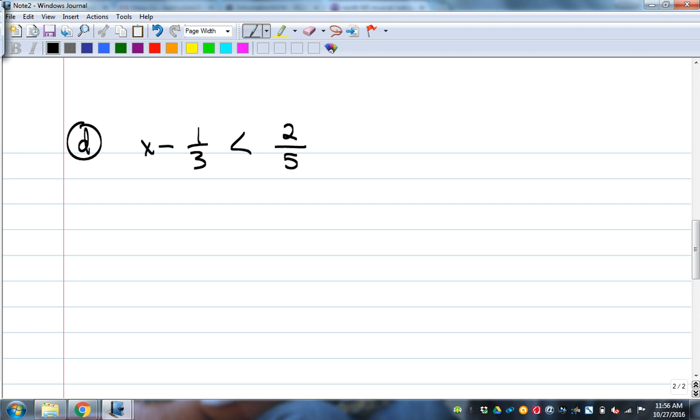x minus 1/3 is less than 2/5. Okay, so to get x by itself, we're going to add 1/3. The common denominator would be 15. So this would be 6 over 15 and 5 over 15. So x is less than 11 over 15. That doesn't reduce.